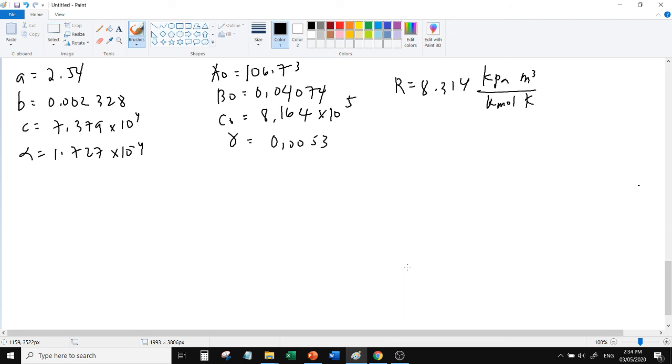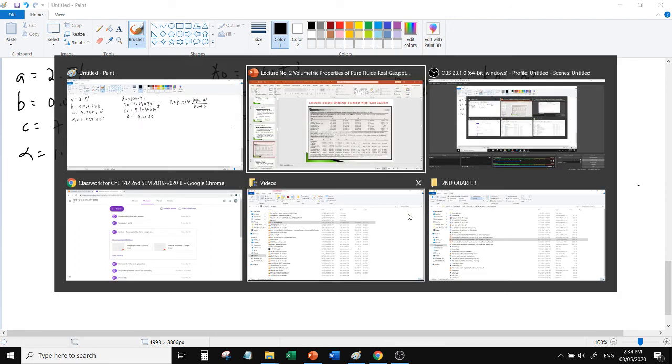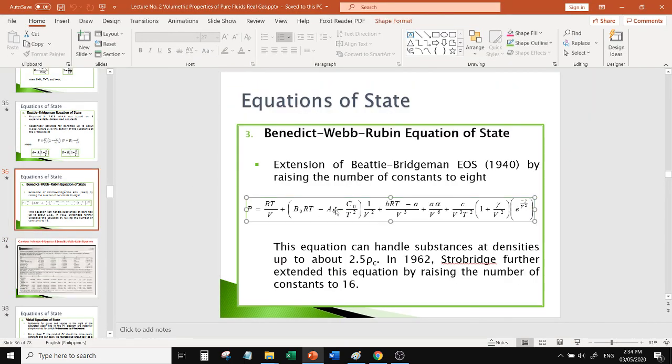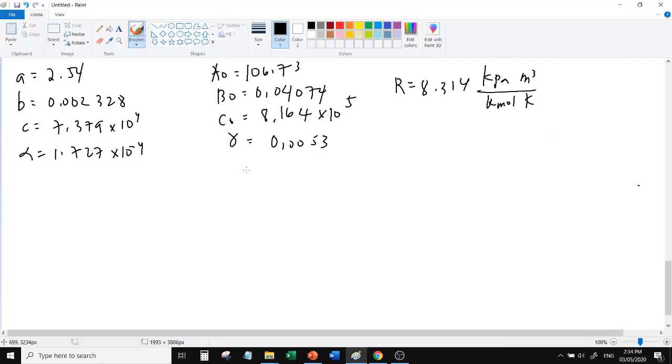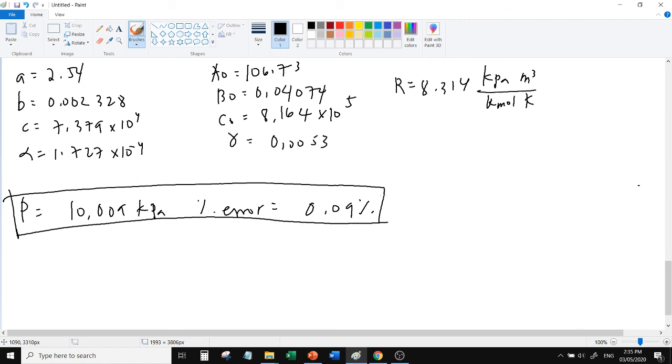Using Benedict-Webb-Rubin, substitute the constants and the given temperature and volume, with volume in kilomoles. The answer from Benedict-Webb-Rubin is P equals 10,009 kilopascals. This is closest to 10,000. The percent error is 0.09 percent. Most accurate because it has a longer equation with more constants. That's our example for equation of state.